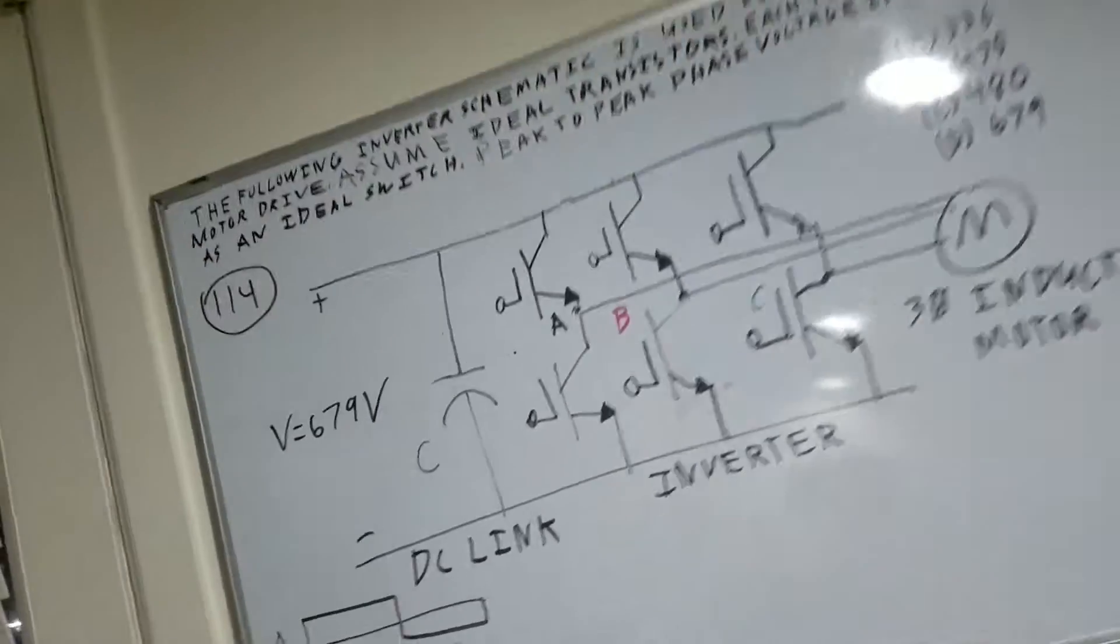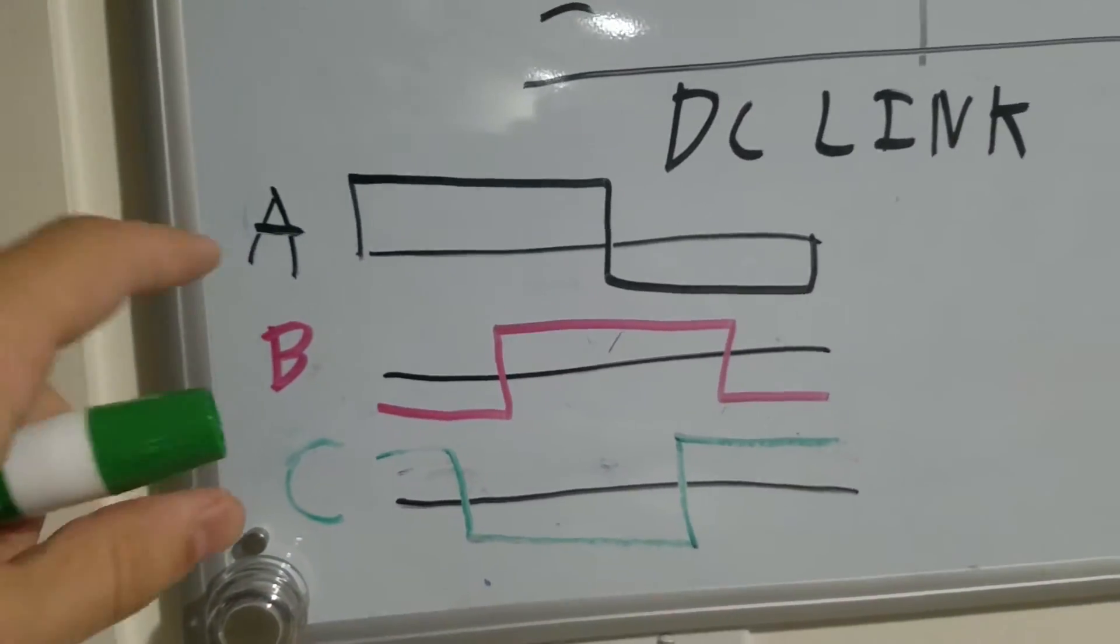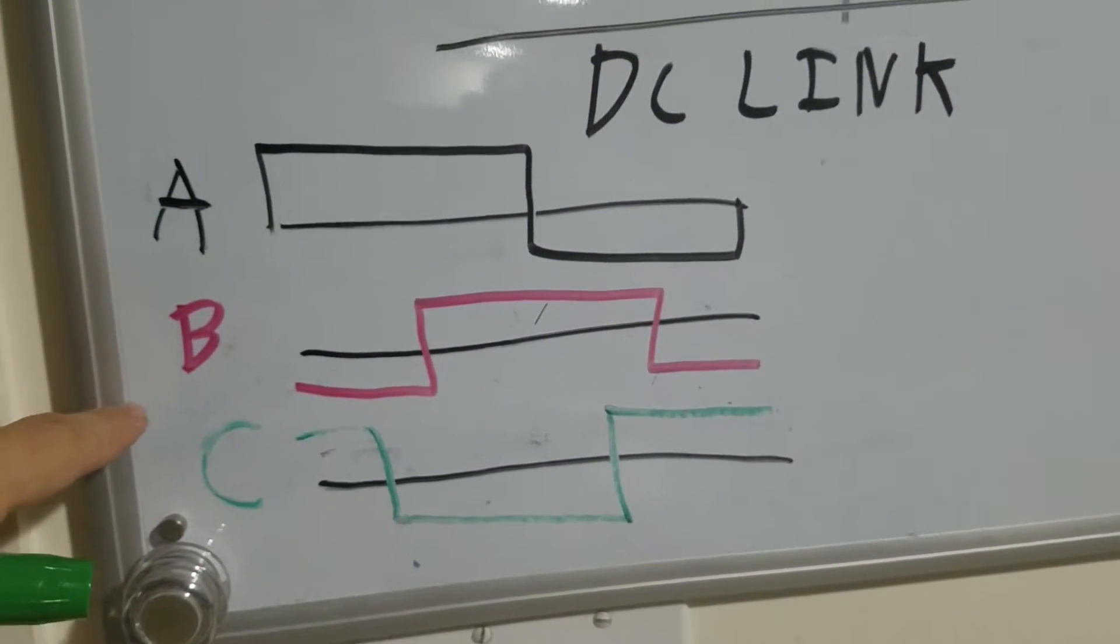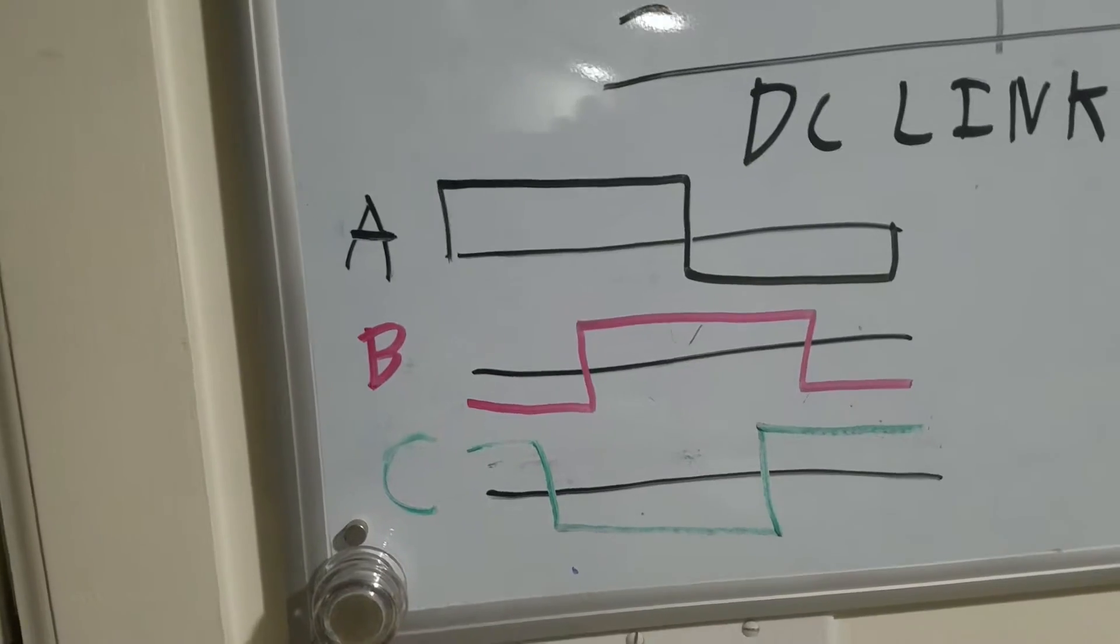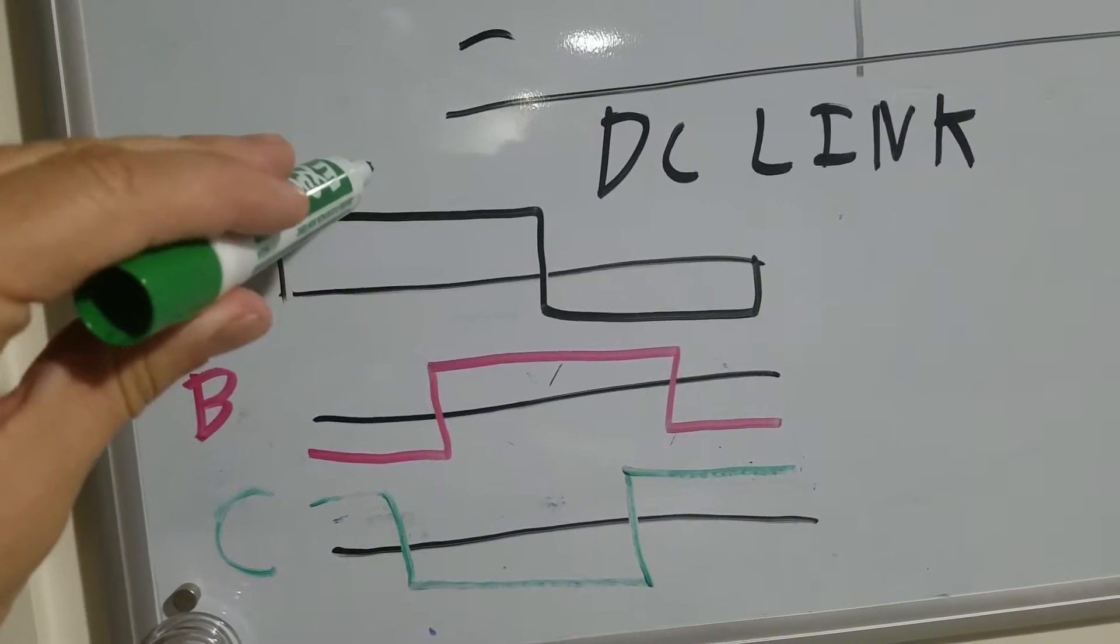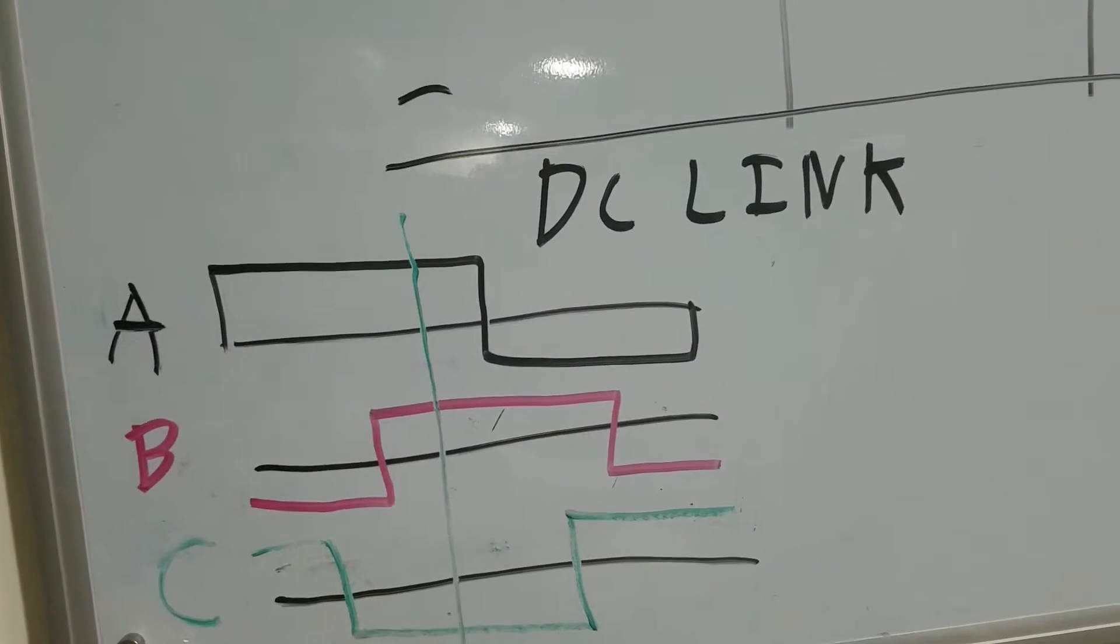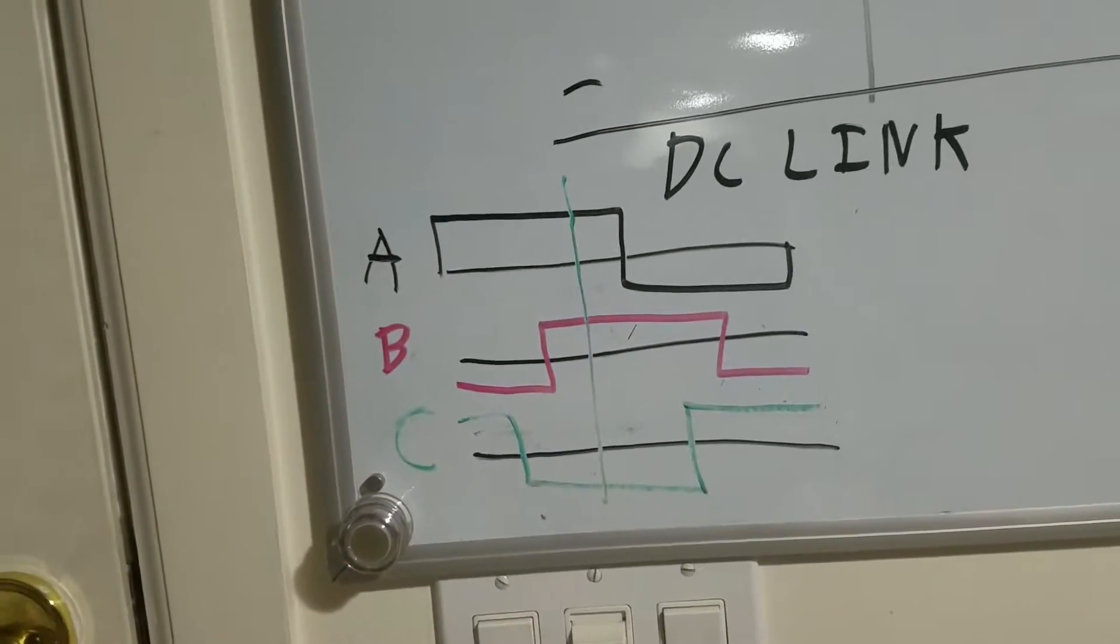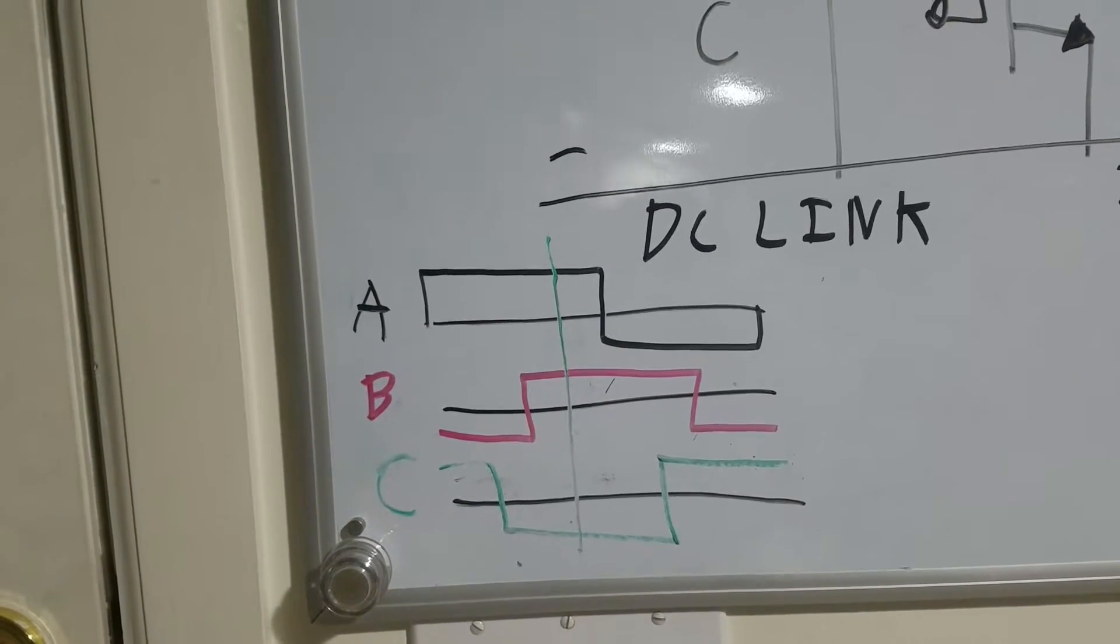So what this looks like is if you select any of these phases, this is what a three phase square wave will look like, and you draw down the line you'll see that you'll always have two phases on and one phase off, or two phases off and one phase on.